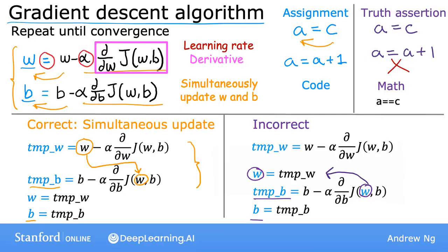But the way that gradient descent is implemented in code, it actually turns out to be more natural to implement it the correct way with simultaneous updates. When you hear someone talk about gradient descent, they always mean the gradient descent where you perform a simultaneous update of the parameters. If, however, you were to implement non-simultaneous update, it turns out it will probably work more or less anyway. But doing it this way isn't really the correct way to implement it, it's actually some other algorithm with different properties. So I would advise you to just stick to the correct simultaneous update and not use this incorrect version on the right.